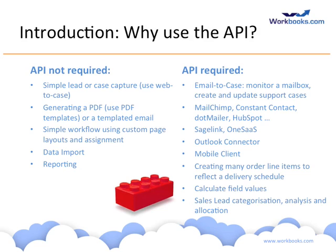You can calculate field values using a process button or by saving the record and having a process run at save time. So although it's not real-time field editing, it does happen whenever you save and refresh the record. Finally, there's sales lead categorization, which we use internally at Workbooks — incoming sales leads get categorized, analyzed, looked up by IP address to determine the country of origin, and then assigned to the appropriate channel partner or sales representative to follow up.